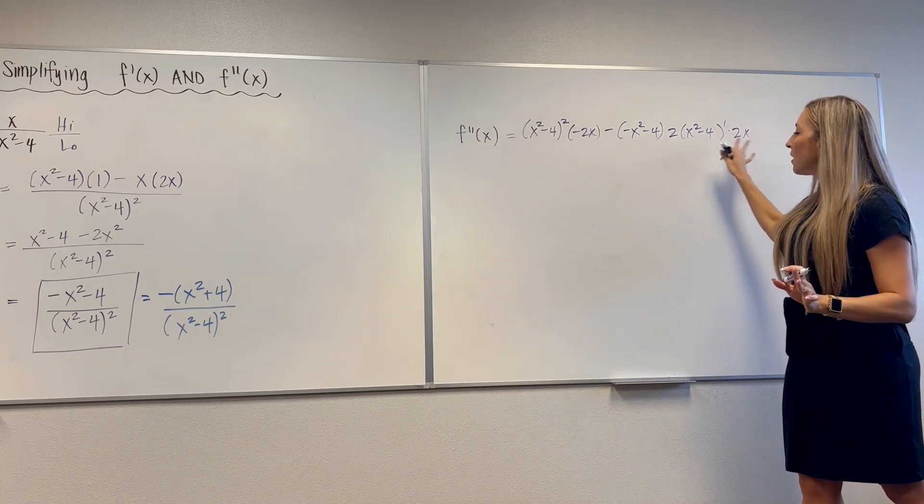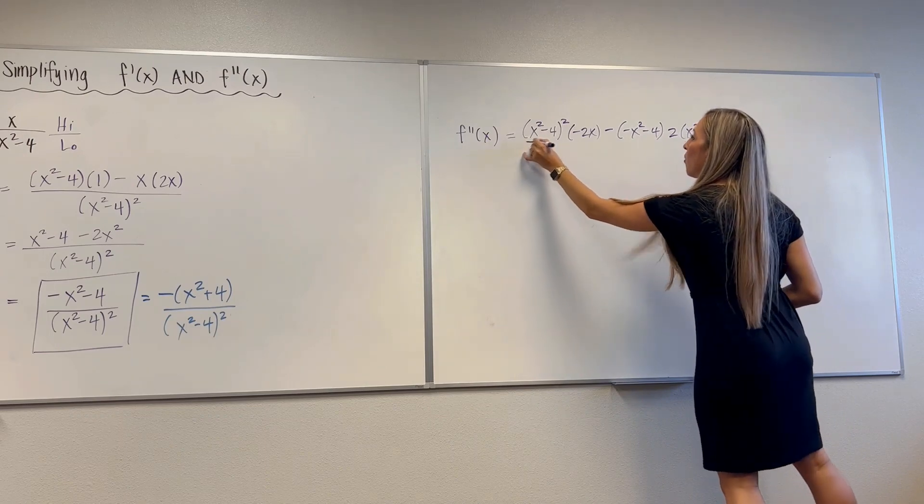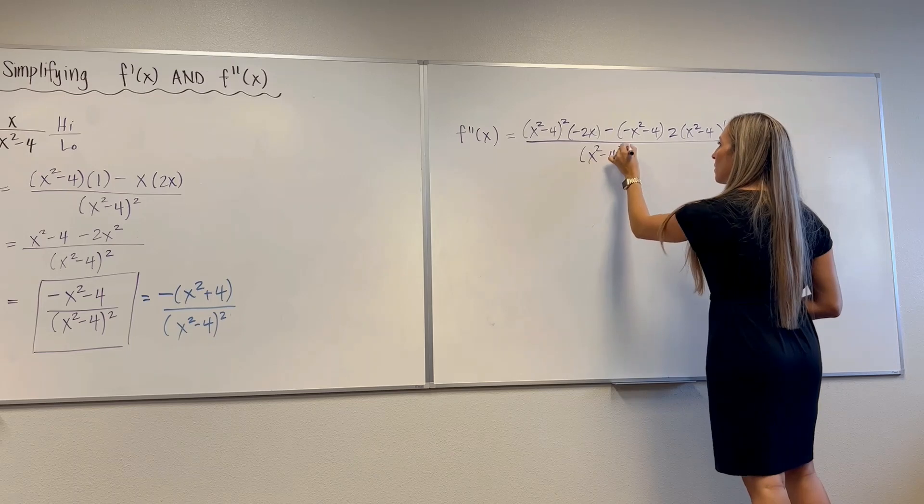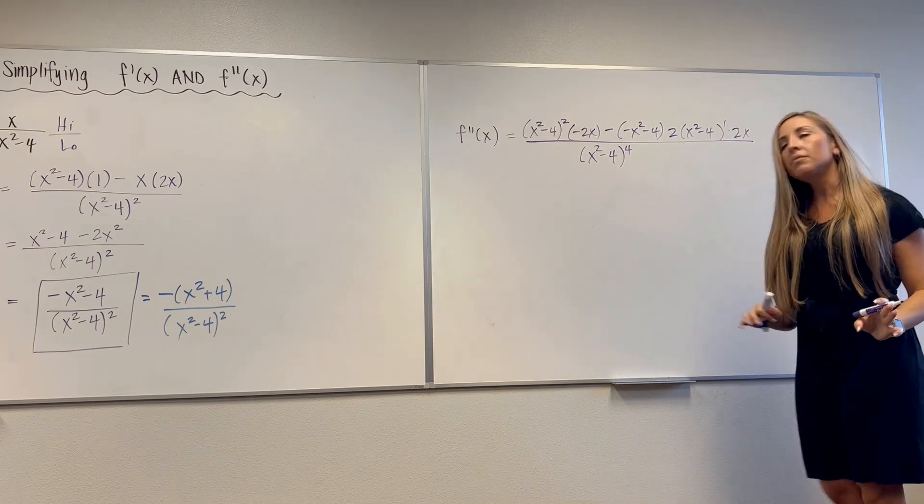Don't touch what's inside. And then times by the chain derivative of the quantity inside. So that would mean 2x. So double check. High d low. Love it. Over low low. So this time I'm going to have x squared minus 4 to the fourth.